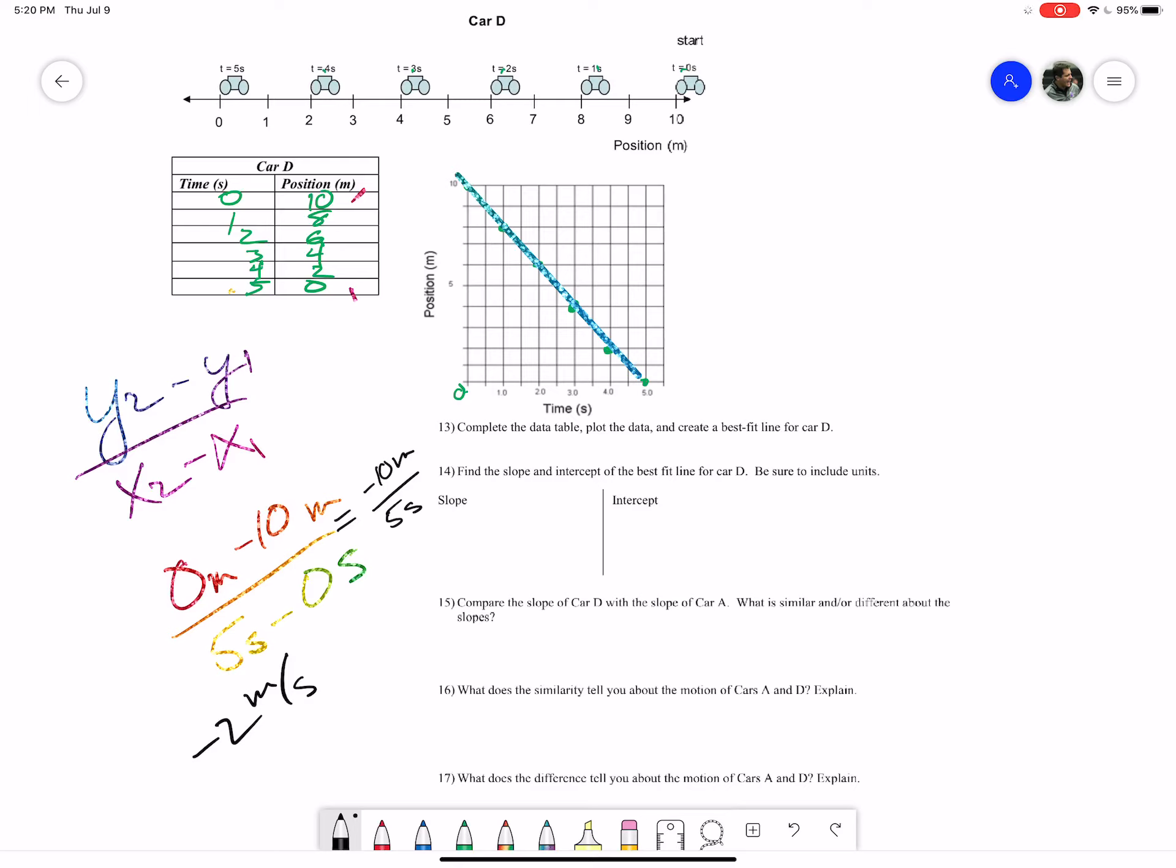So we get negative two meters per second there. That's interesting. You get a negative slope, right? So I wonder what that means. What about our y-intercept? Our y-intercept starts up here at zero seconds. It's at 10, so our y-intercept is going to be 10 meters.